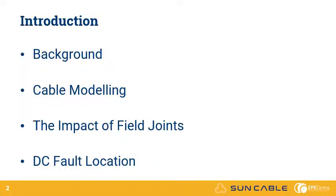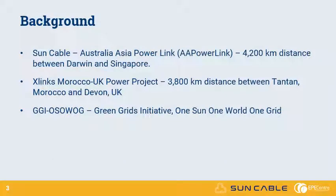Very long HVDC cables are those that exceed the longest HVDC cables in the world of about 600 km and exceed it by a significant margin to around 4000 km. There are a number of projects in the pipeline looking at distances this long such as Sun Cable's Australia Asia Power Link.